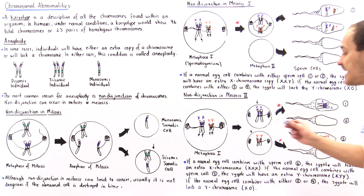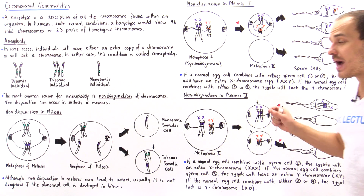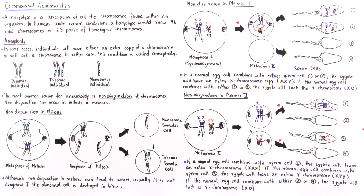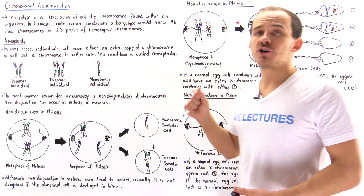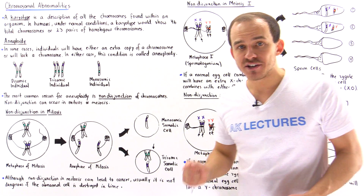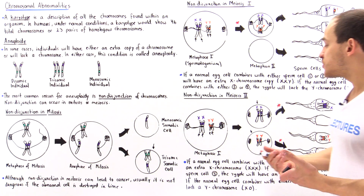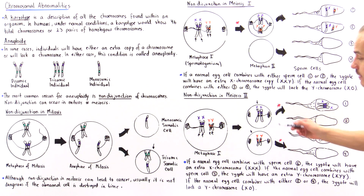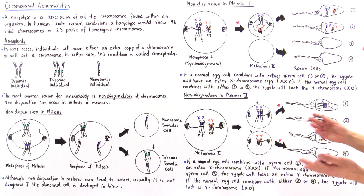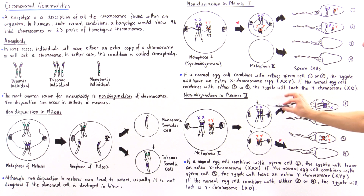Now in anaphase of meiosis II — anaphase II of meiosis — we have non-disjunction take place in both of these cells. Of course non-disjunction could take place in just one of the two cells, but let's assume it takes place in both.